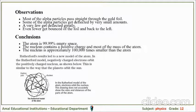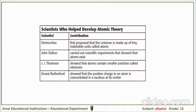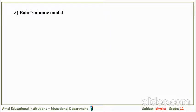Rutherford's results led to a new model of the atom: negatively charged electrons orbit the positively charged nucleus, similar to the way planets orbit the sun. Scientists who helped develop the atomic theory are mainly Democritus, John Dalton, Joseph Thomson, and Ernest Rutherford. Now, why do we study Bohr's model? This model is needed because of the need for a new model.